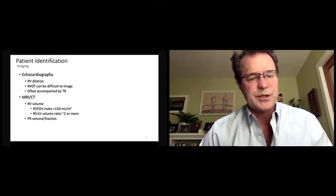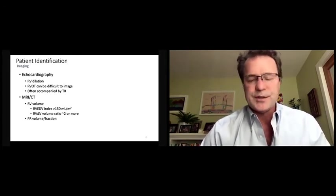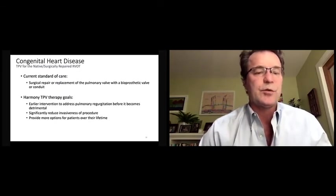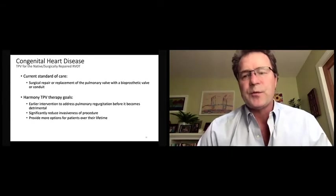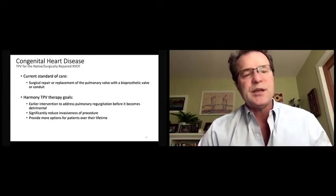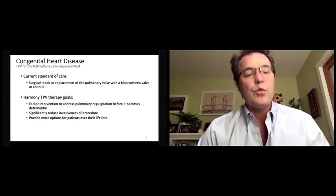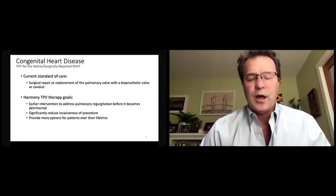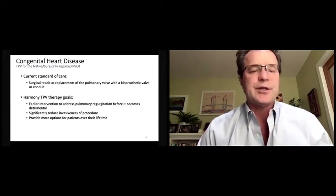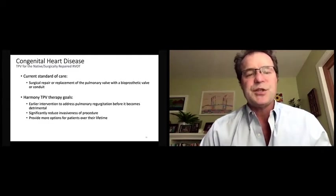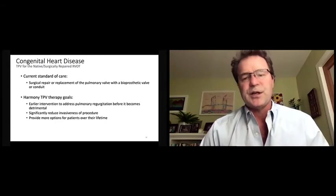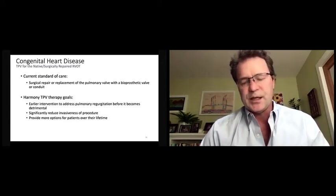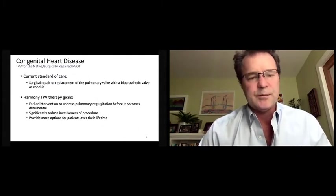And then we also measure the pulmonary regurgitant volume or fraction, and as I said earlier, 30% is usually the threshold that we look at for this condition and treating it with a valve. But if there is lesser pulmonary regurgitation, but symptoms or an inordinate degree of dilation, that would also be potentially treatable. The current standard of care for pulmonary regurgitation has been surgical repair or more commonly replacement of the pulmonary valve with some form of bioprosthetic valve or conduit. The goals of the Harmony transcatheter pulmonary valve are to allow one for significantly less invasiveness of a valve replacement procedure. This is a transcatheter procedure, not an open heart procedure.